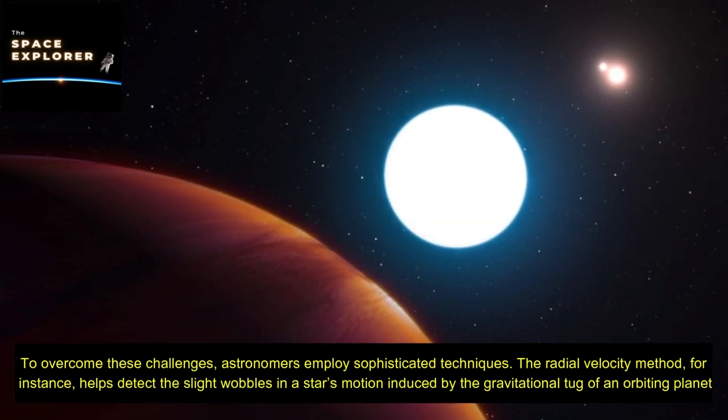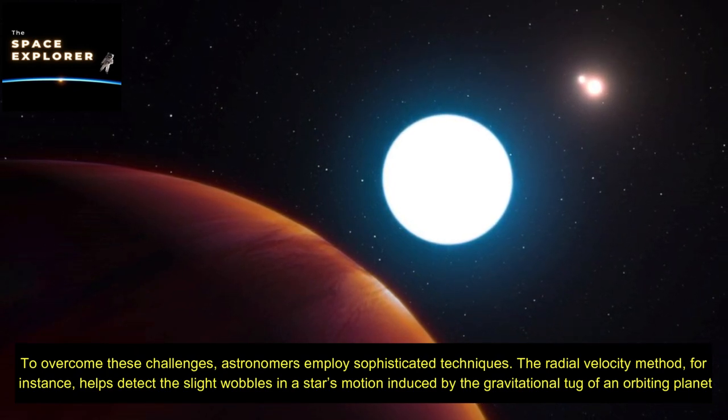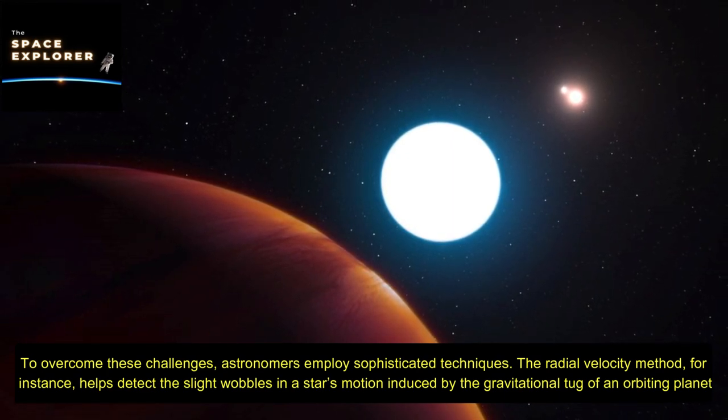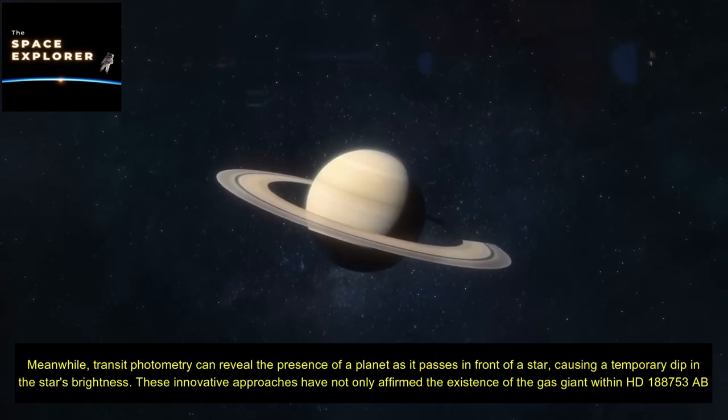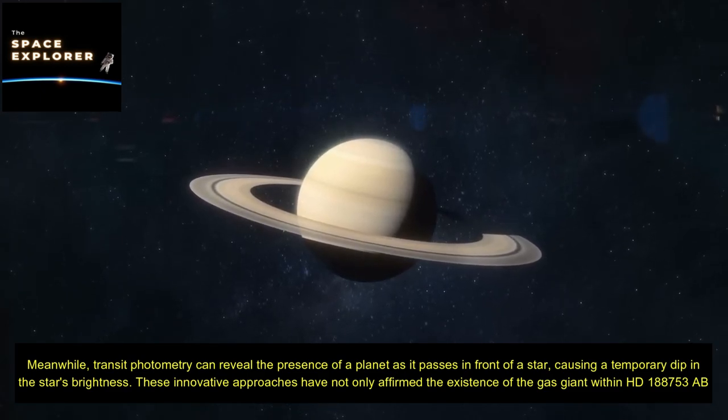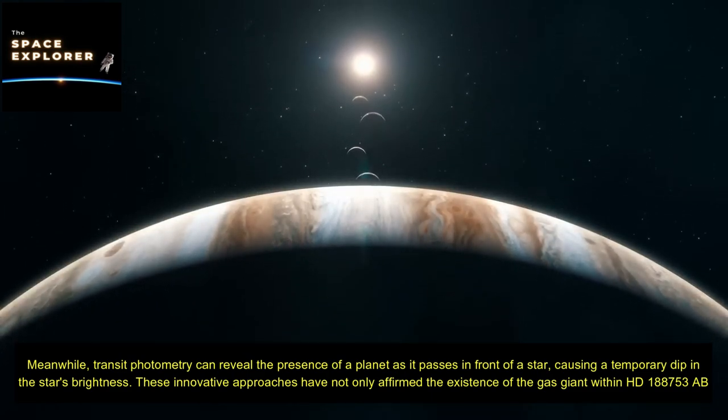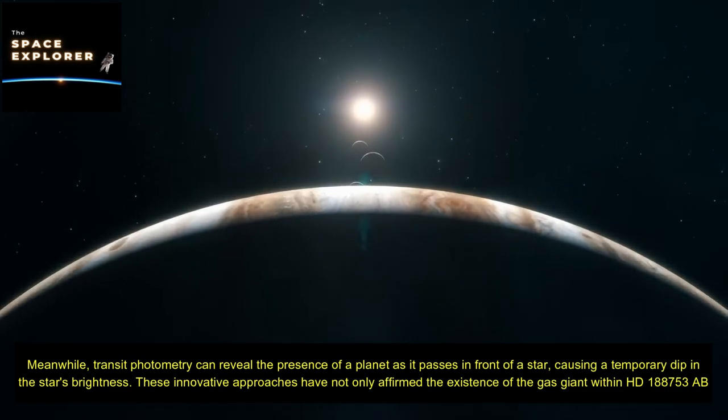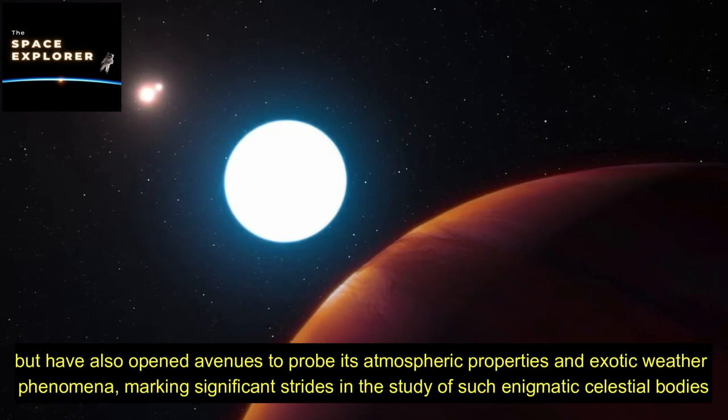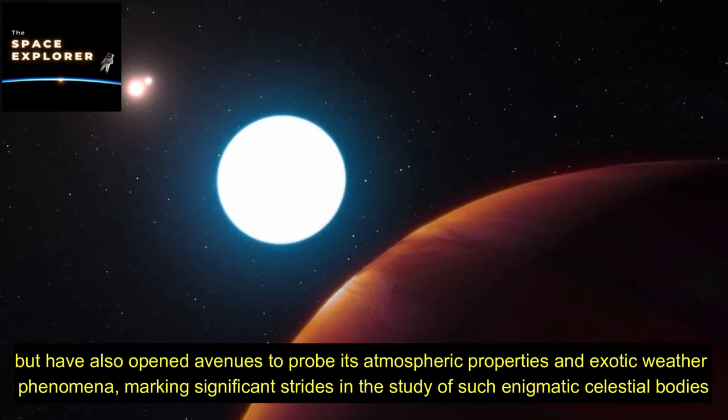To overcome these challenges, astronomers employ sophisticated techniques. The radial velocity method, for instance, helps detect the slight wobbles in a star's motion induced by the gravitational tug of an orbiting planet. Meanwhile, transit photometry can reveal the presence of a planet as it passes in front of a star, causing a temporary dip in the star's brightness. These innovative approaches have not only affirmed the existence of the gas giant within HD 188,753 AB, but have also opened avenues to probe its atmospheric properties and exotic weather phenomena, marking significant strides in the study of such enigmatic celestial bodies.